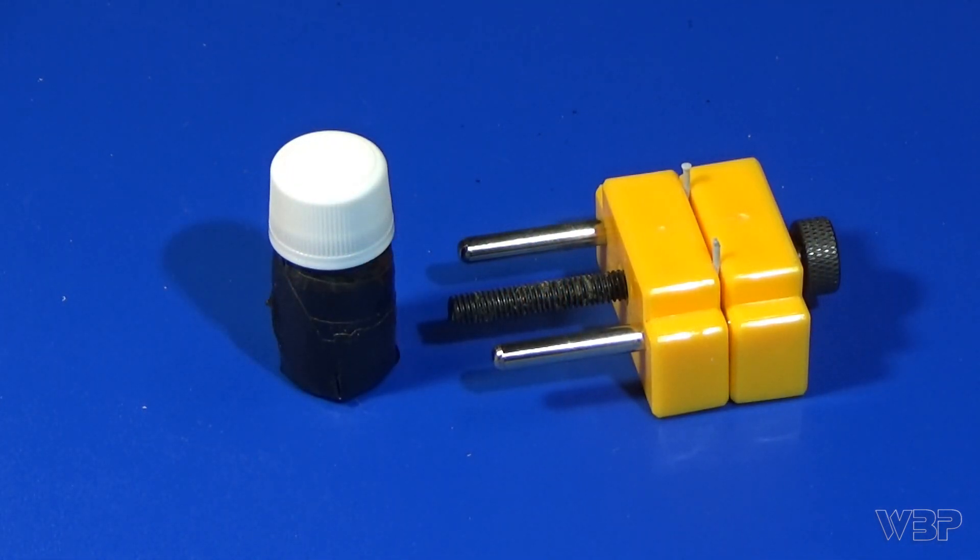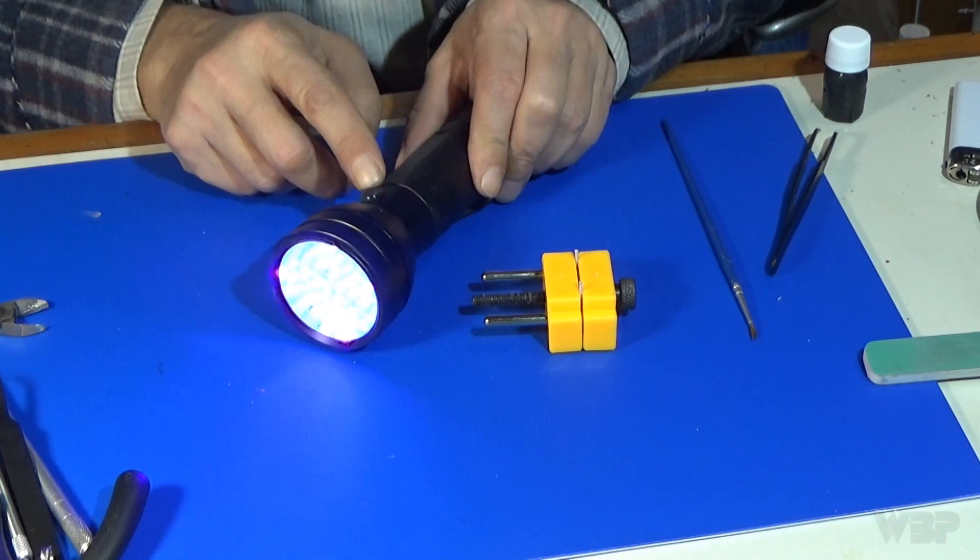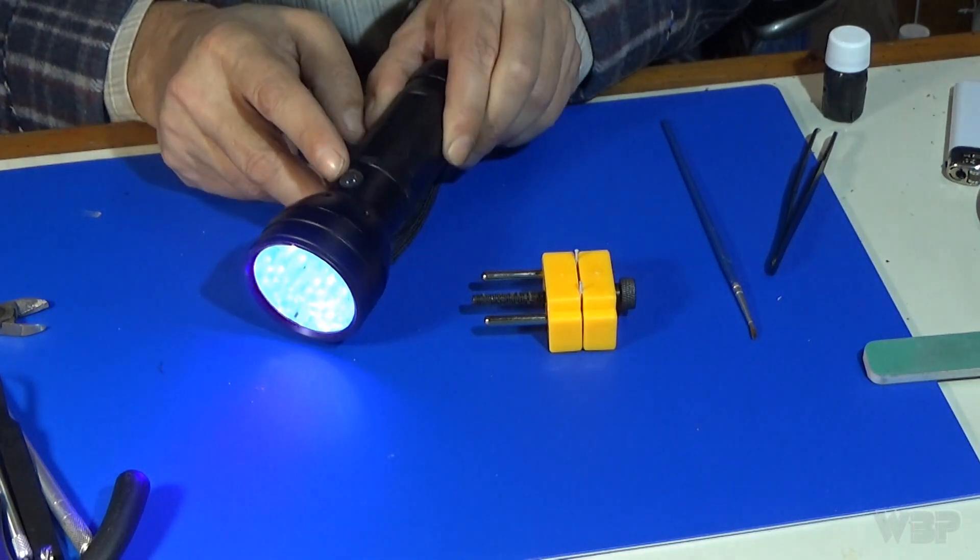For ease of use, I've transferred a small amount of the resin in a small bottle and I've covered it completely with black tape so no light passes through. The UV light source I use is a cheap UV LED torch, which costs around 6 euros.